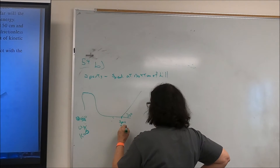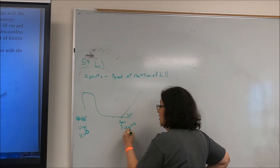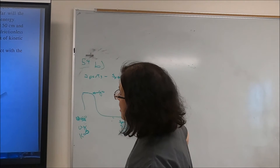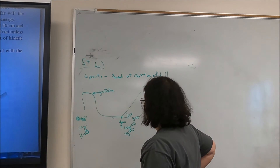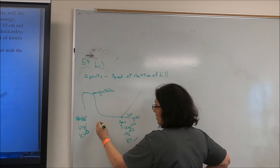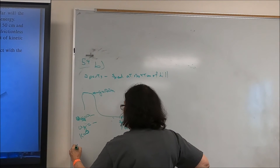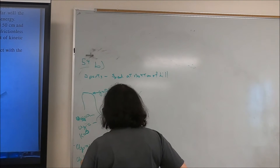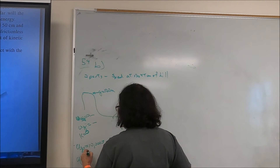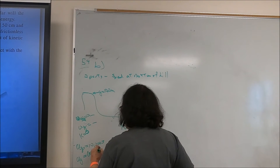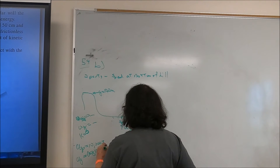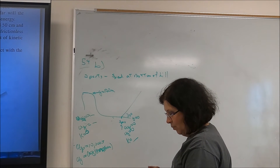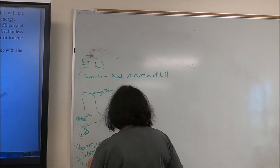Spring PE was already calculated as 10,000 joules. Gravitational PE = 100 kg × 9.80 m/s² × 10 m = 9,800 joules.